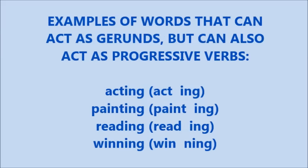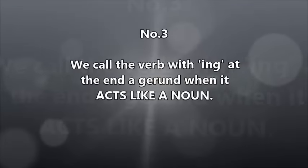Examples of words that can act as gerunds but can also act as progressive verbs: acting, painting, reading, winning. Notice the base forms — act, paint, read, and win. We're adding a suffix, the suffix being -ing, to the base form of these verbs.